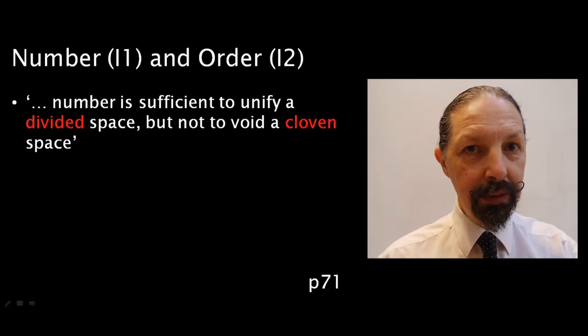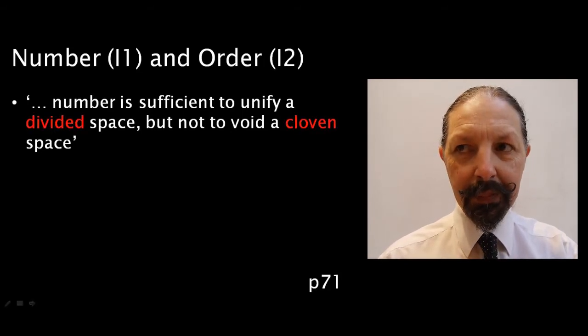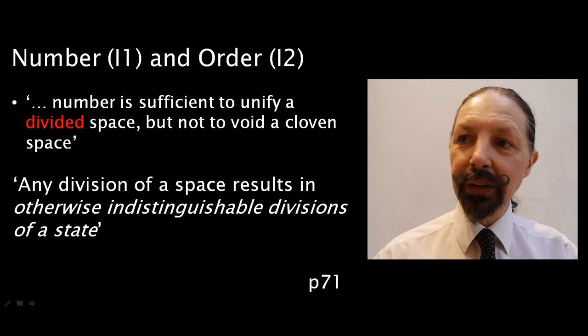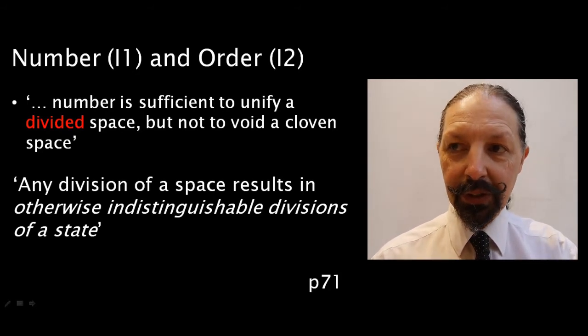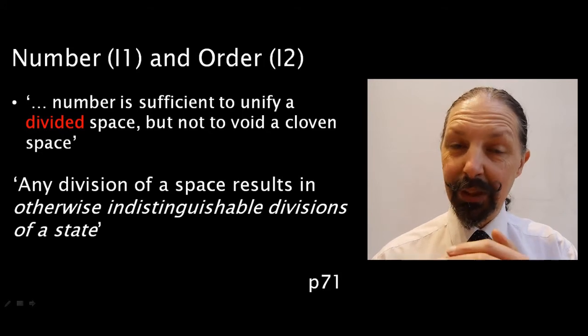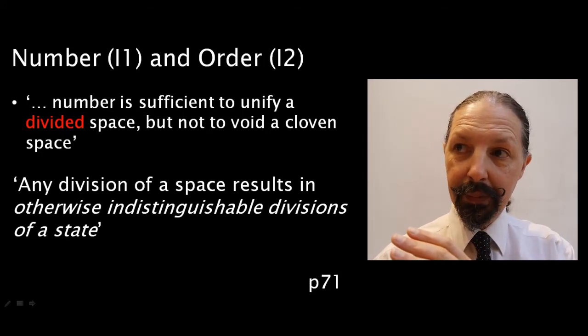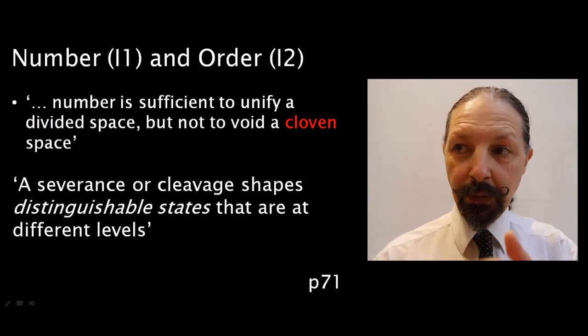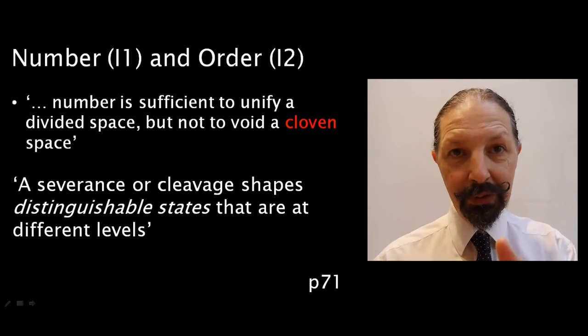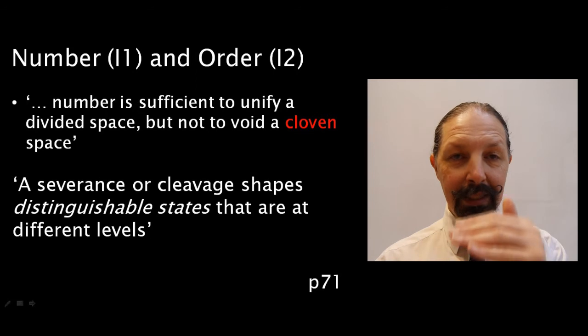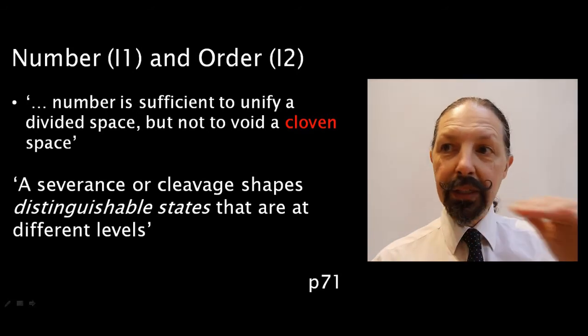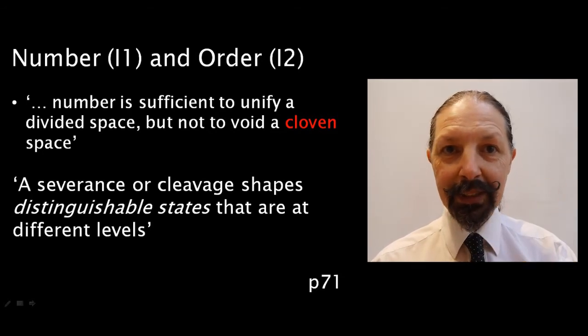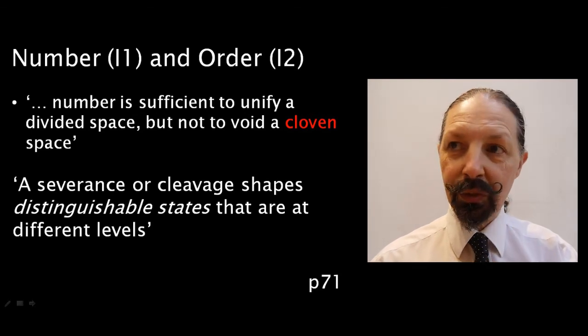So, here's how he explains number. Number is sufficient to unify a divided space, but not to void a cloven space. What does he mean by divided and cloven? What kind of space is he talking about here? Well, let's take divided first. Any division of a space, he says, results in otherwise indistinguishable divisions of a state. That's reminiscent to me of mark mark equals mark. What about a cloven space? A severance, or cleavage, shapes distinguishable states that are at different levels, and that, to me, implies a nested series. It's as if the divided space works horizontally, and the cloven space works vertically. At least that's how I understand Spencer-Brown to be using these terms in this work.